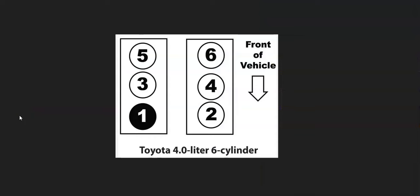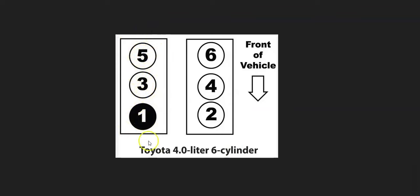The first thing to do is locate Bank 1 on your engine. V6 and V8 engines have two banks. To find Bank 1, you find the number one cylinder — that's Bank 1, and the opposite side is Bank 2. Here on a Toyota 4.0-liter V6, here's the number one cylinder, so this is Bank 1 — the side of the engine having the issue.